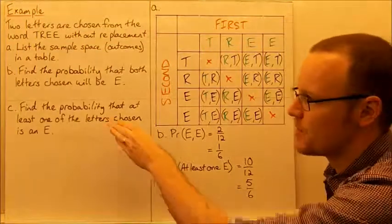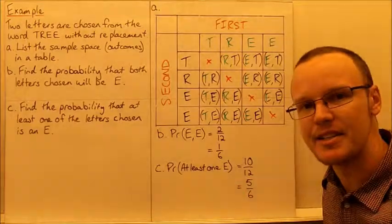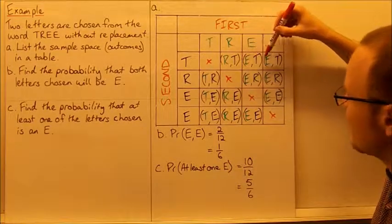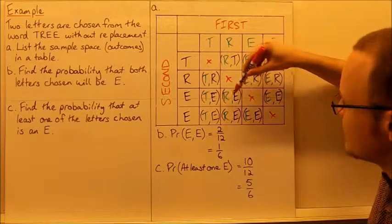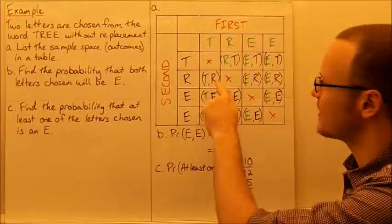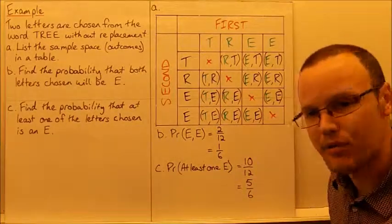What about the probability that at least one of the letters chosen will be an E? We're not saying it's the first or second, but we can look at the outcomes that have E's in them: 1, 2, 3, 4, 5, 6, 7, 8, 9, 10. Ten outcomes have at least one E. There are two that do not have an E in the outcome. So that's 10 out of 12, which simplifies to 5/6.